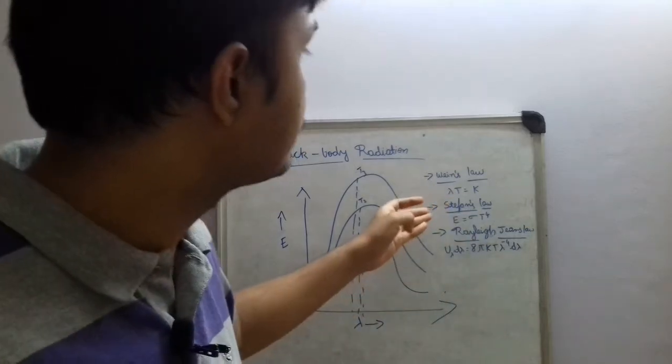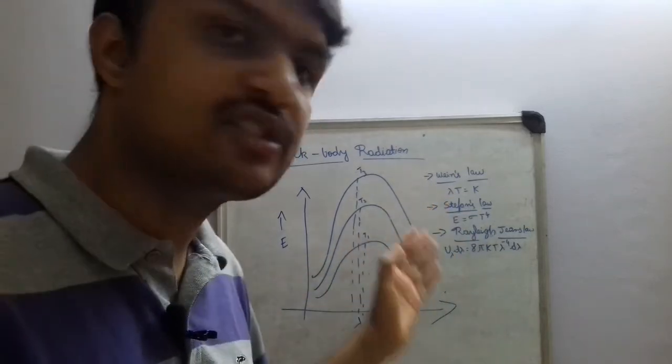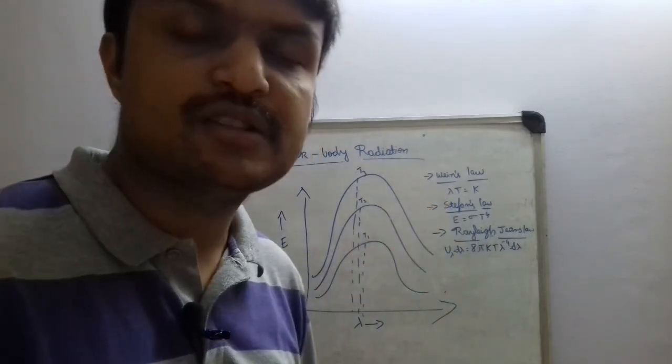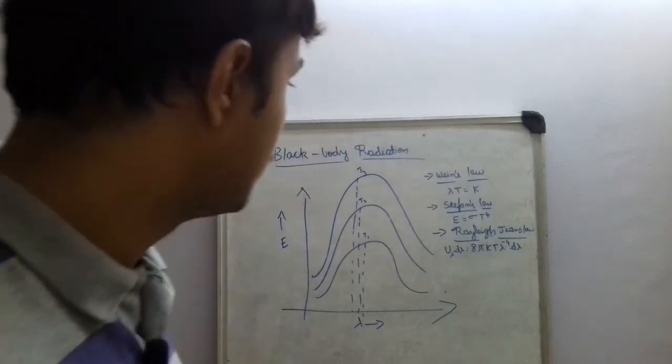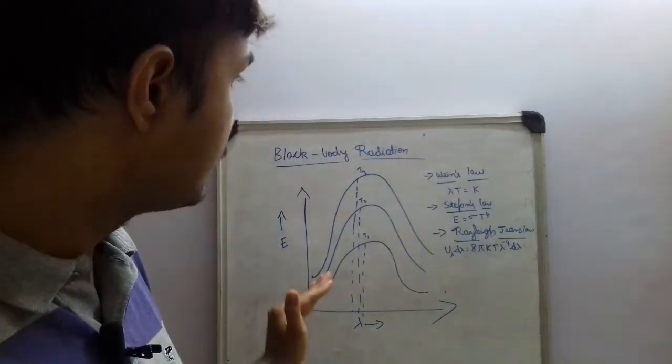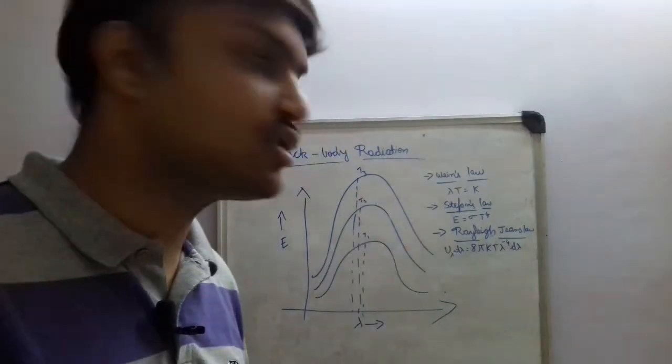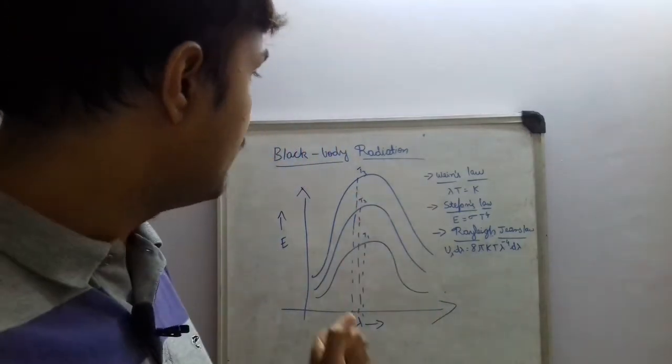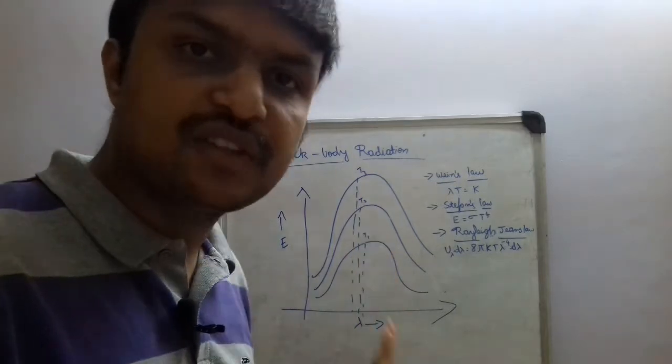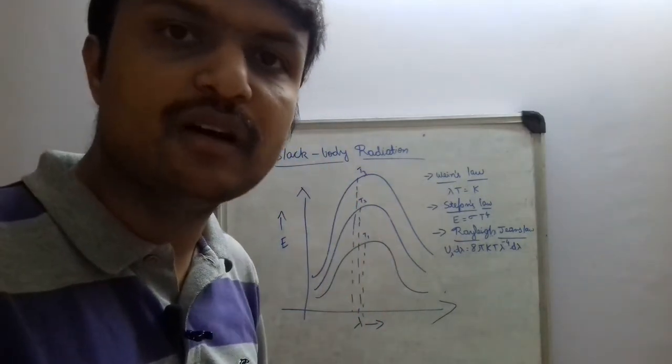The people like Wien's law, Stefan's law, and Rayleigh-Jeans law tried to explain these curves and could not explain this. The way they tried, the closest thing that came into an explanation was Rayleigh-Jeans law, where he could explain half of the curve and he could not explain the other half of the curve